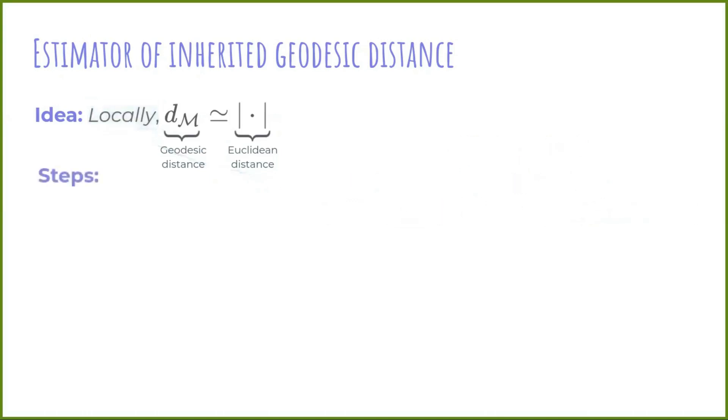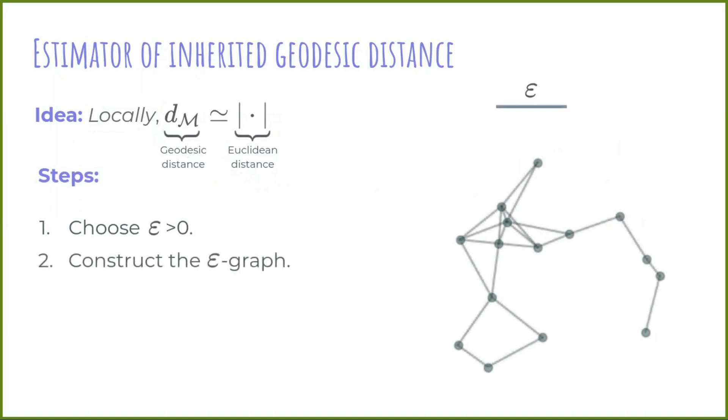The steps to construct the estimator are the following. Second, construct the epsilon graph, a graph with a vertex for each point in the sample, and an edge between points at Euclidean distance at most epsilon.